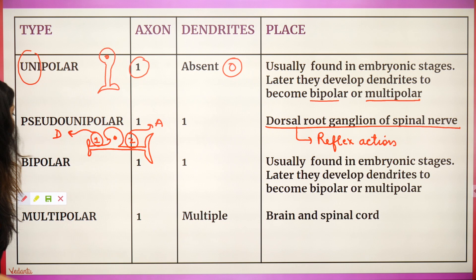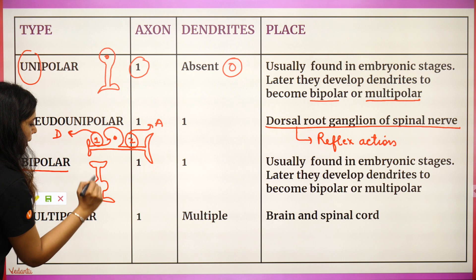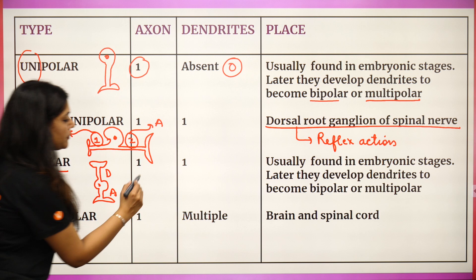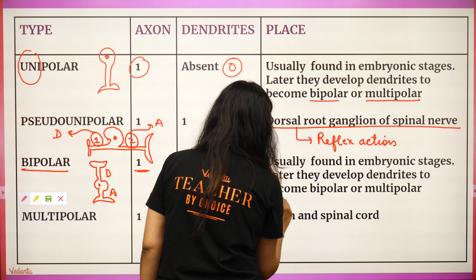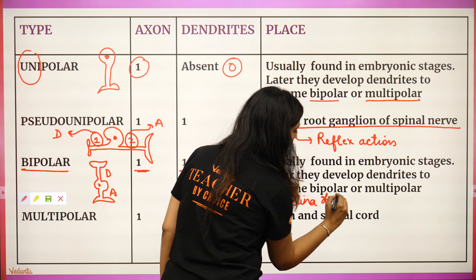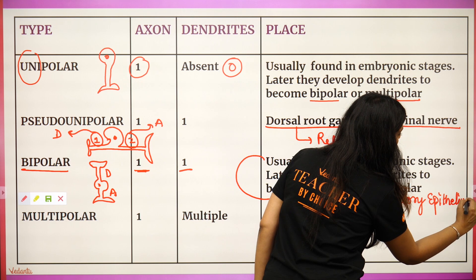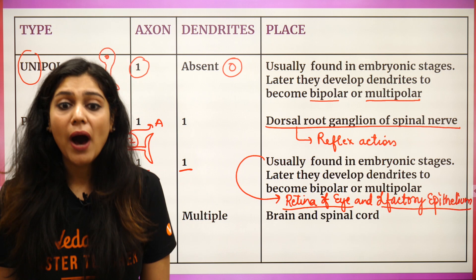Next: bipolar. The name means two poles. It has one axon and one dendrite. Where do we get it? First, in the retina of the eye — photoreceptor cells, ganglionic cells, and bipolar cells. And also in the olfactory epithelium.